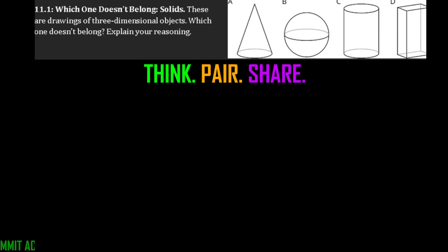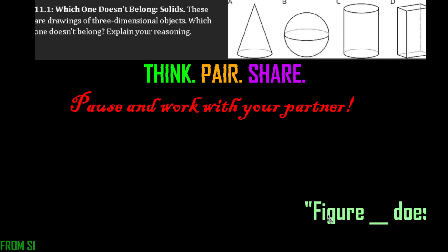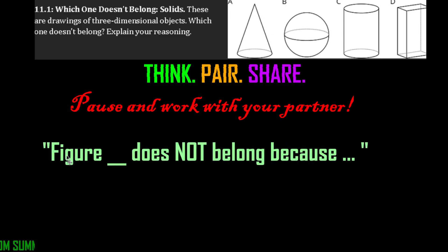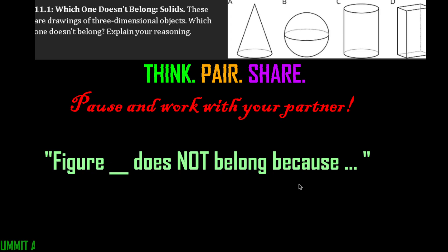Pause the video, work with your partner, try to figure out — pick one of these. For a sentence starter you can say: figure blank — A, B, C, or D — does not belong because, and then explain your reasoning. Try that out, work with your partner, pause for yourself.